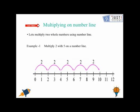Let's see how we can multiply on the number line. Let's multiply 2 whole numbers. Let the whole numbers be 2 with 5 on this given number line.